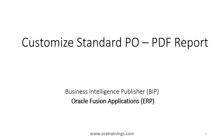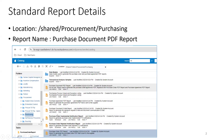Hello all, welcome to orotrainings.com. In this session we'll discuss how to customize a standard PO PDF report in Oracle Fusion. The first thing we have to understand is where exactly the standard PO report resides. It is available in the location: Shared > Procurement > Purchasing, and the report name is Purchase Document PDF Reports.